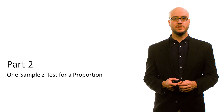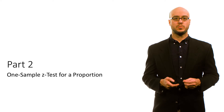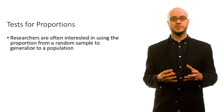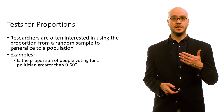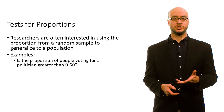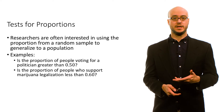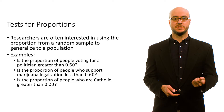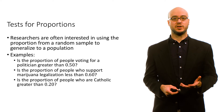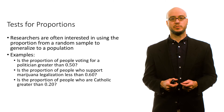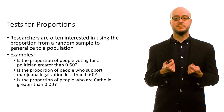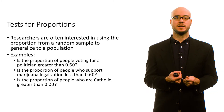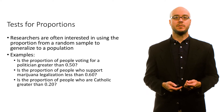Welcome to part two of this lecture on inferences for proportions. We're now going to look at the one-sample z-test for a proportion. Often, researchers are interested in using a proportion from a random sample to generalize to a population. Examples include: is the proportion of people voting for a politician greater than 0.5? Is the proportion of people who support marijuana legalization less than 0.6? Is the proportion of people who are Catholic greater than 0.20? In each of these examples, there's some claim made about a proportion in the population, and we're interested in using a sample proportion from a random sample to test these claims.